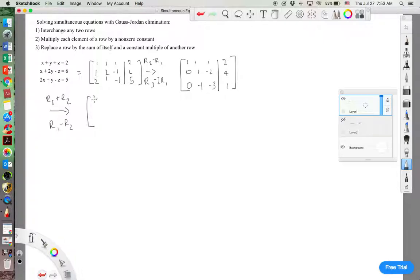So r1 minus r2, 1 minus 0 is 0, 1 minus 1 is 0, and 1 minus negative 2 is 3. Second row stays the same, 0, 1, negative 2. And then r3 plus r2, so we're going to end up with 0 there, 0 again, and negative 3 plus negative 2 is negative 5.